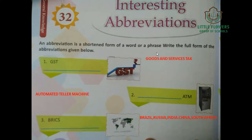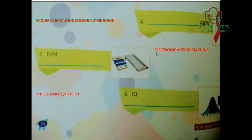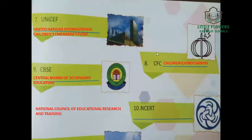The next one is ATM — Automated Teller Machine. BRICS stands for Brazil, Russia, India, China, and South Africa. AIDS stands for Acquired Immunodeficiency Syndrome. EVM stands for Electronic Voting Machine. IQ stands for Intelligence Quotient. UNICEF stands for United Nations International Children's Emergency Fund.